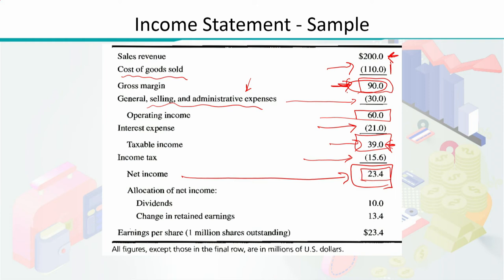The net income of 23.4 million dollars is then allocated. The company decides how much to pay as dividends and how much to retain as retained earnings. Suppose 10 million dollars is paid as dividend and the remaining 13.4 million dollars is retained for the company's operations. Additionally, earnings per share is calculated: the net income is divided by the number of outstanding shares, giving 23.4 per share.